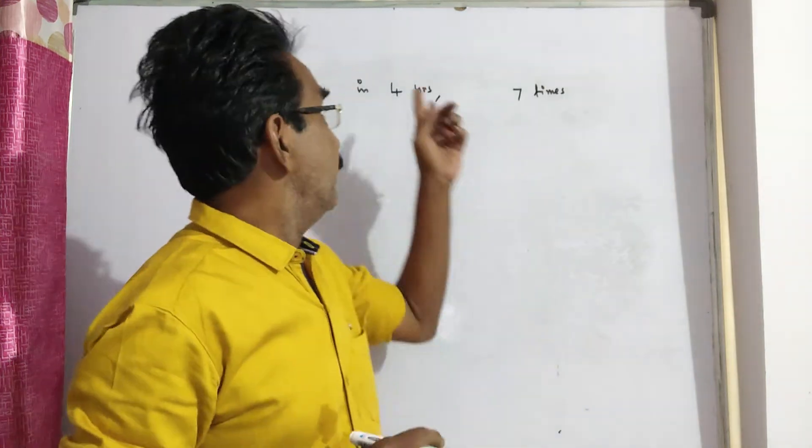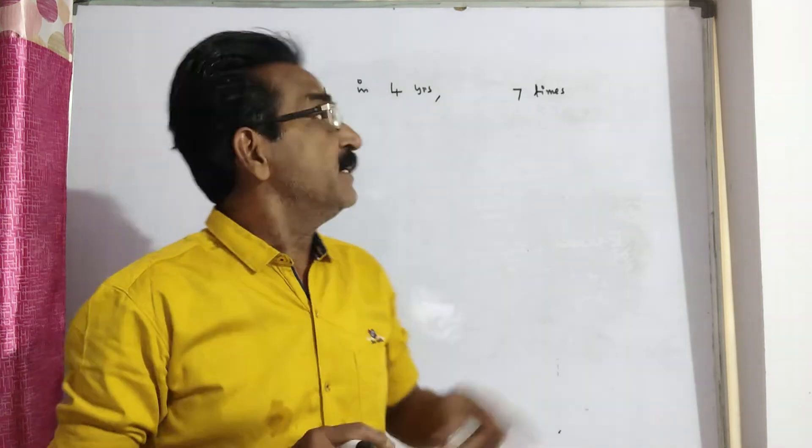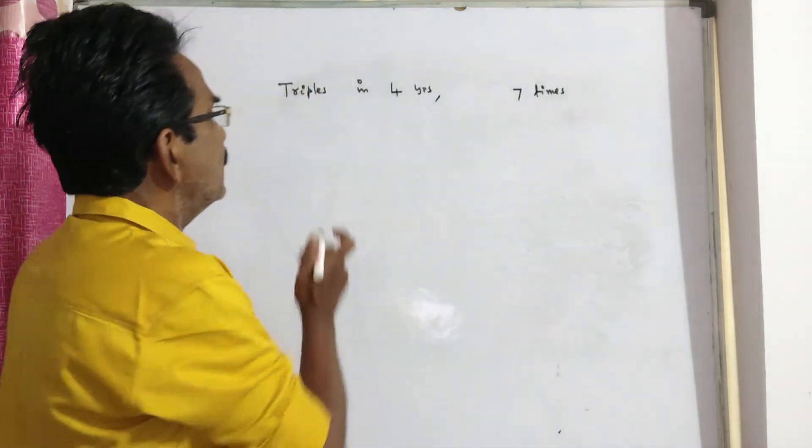See friends, a certain sum of money triples itself in 4 years. The question is in how many years it becomes 7 times of itself at simple interest.